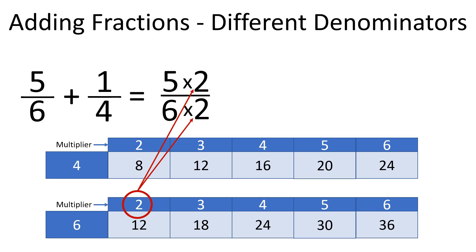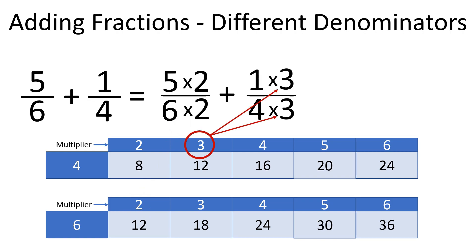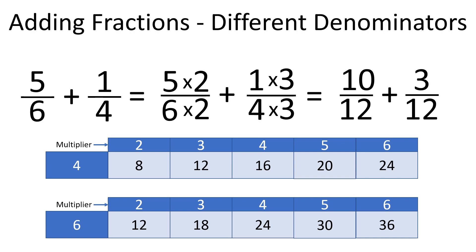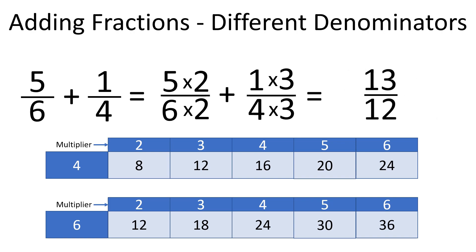The denominator in the second fraction needs to be multiplied by 3 to get 12, so we multiply the numerator by 3 as well. 5 times 2 is 10, 6 times 2 is 12, giving us 10 over 12 for the first fraction. 1 times 3 is 3, 4 times 3 is 12, so we have 3 over 12 for the second fraction. Now we have fractions with the same denominators, and we can add them by adding numerators only: 10 plus 3 is 13, and the denominator stays the same. Thus, 5 sixths plus 1 fourth is 13 twelfths, or 1 and 1 twelfth.